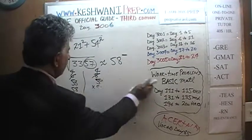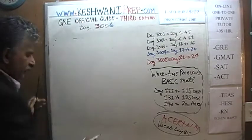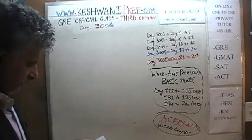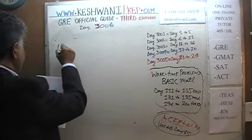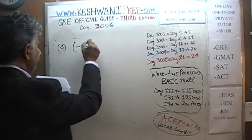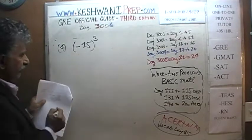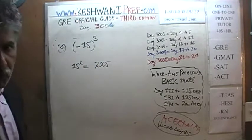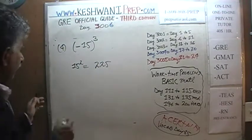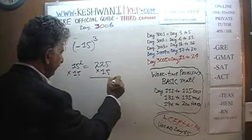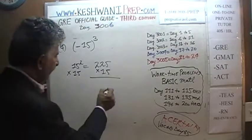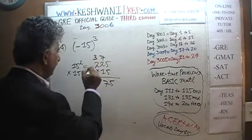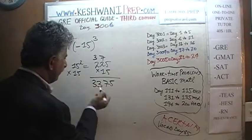Let's do number 4. Number 4 is the silliest of all. If you look at their so-called explanation with the calculator, it's insanity. All they are asking is to find the cube of negative 15. We know 15 squared is 225 — you have to know your squares up to 20. Multiply that one more time by 15: 15 fives are 75, carry 7. 15 threes are... 30 plus 7 is 37, carry 3. 30 plus 3 is 33. So 15 cubed is 3375.